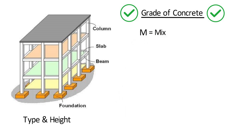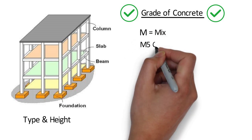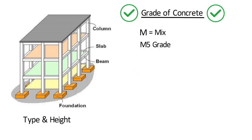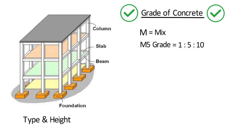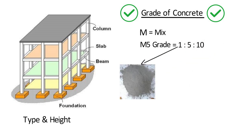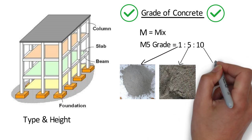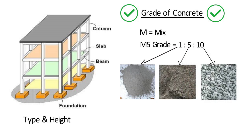For example, for M5 grade, the mix proportion is 1:5:10, where 1 is the ratio of cement, 5 is the ratio of sand, and 10 is the ratio of coarse aggregate, based on volume or weight of materials.